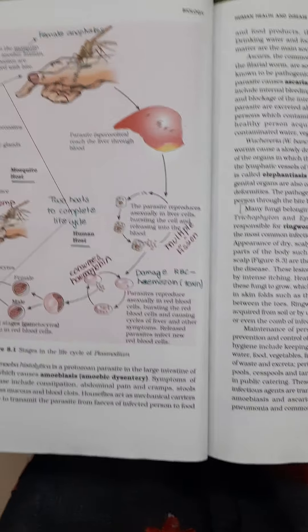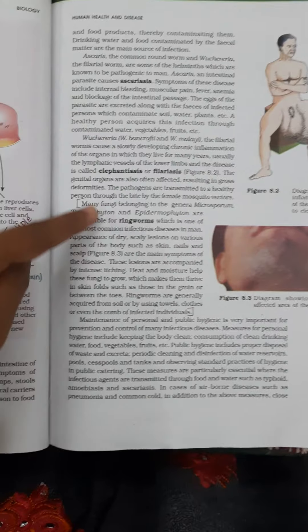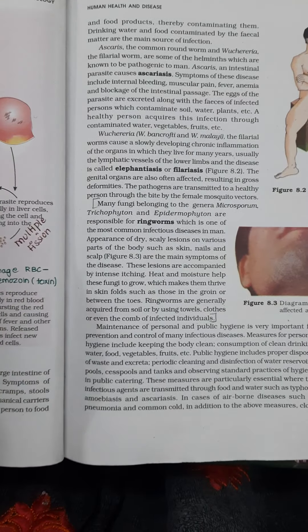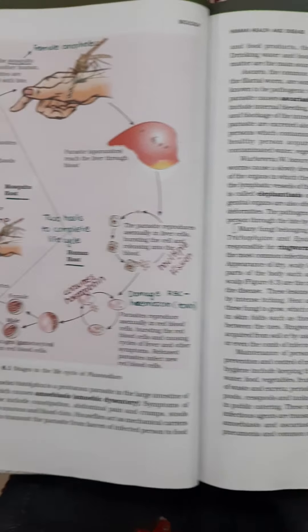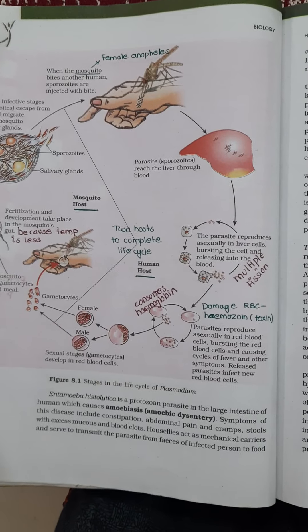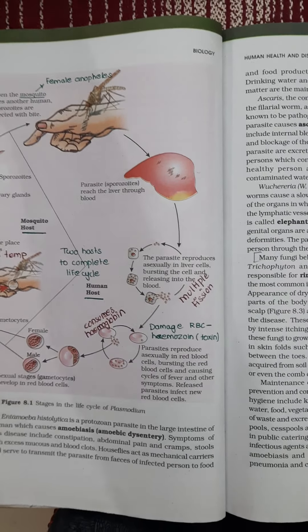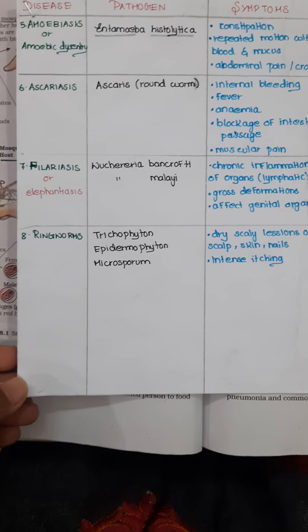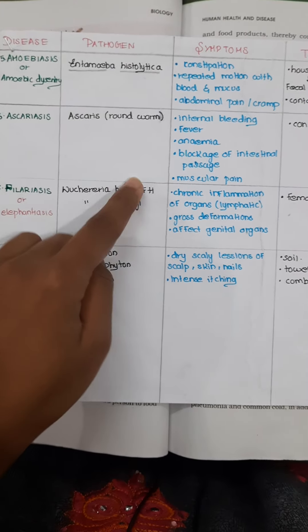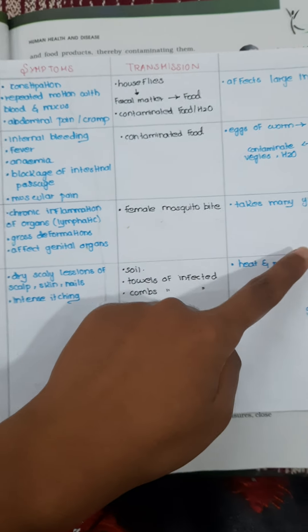For each disease, we will cover symptoms, causes, effects, pathogens, terms, transmissions, and so on. If you are able to organize this, you will see all diseases clearly laid out.